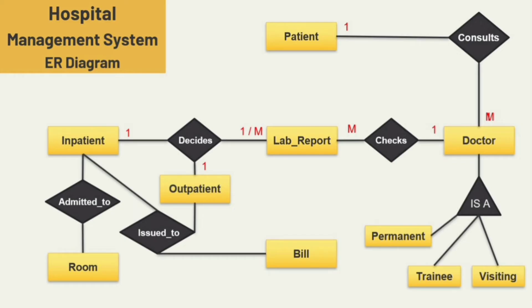An inpatient is admitted to only one room, so I am adding a one-to-one relationship here. The hospital issues one final bill to the patient which includes all charges, so one patient is issued one bill. That is the cardinality ratio between these entities. Now let's move to the attributes — for the patient entity, the first attribute is patient ID.